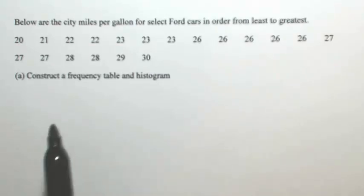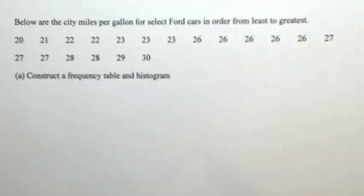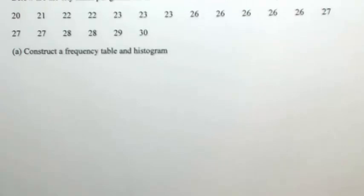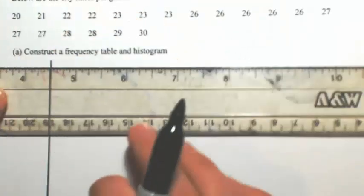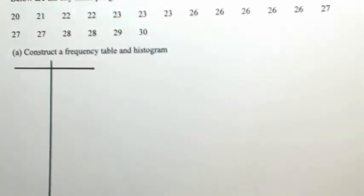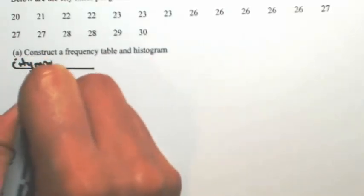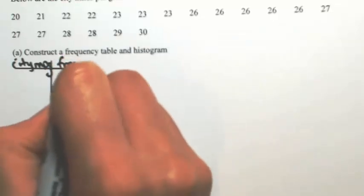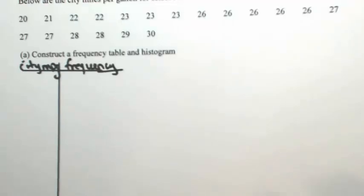Looking at our data, the smallest number I see is 20 and the largest one is 30, so I think we can just go by ones. I'm going to set up a table. On the left side will be the city miles per gallon and on the right side will be the frequency. The smallest is 20 and the largest is 30, so we need to list out every number in between.